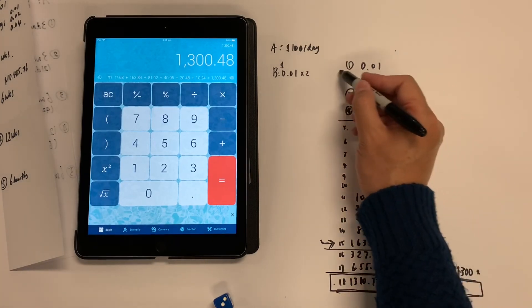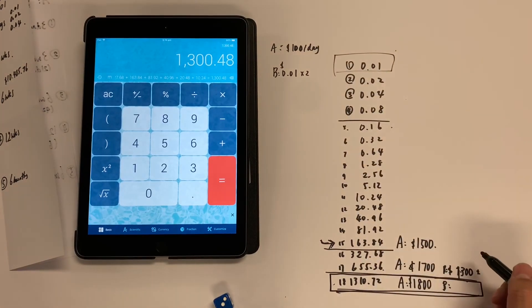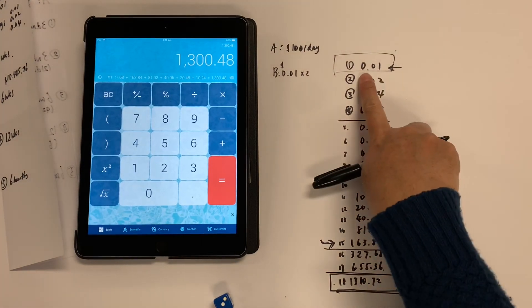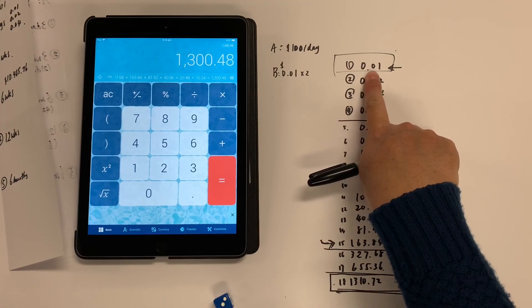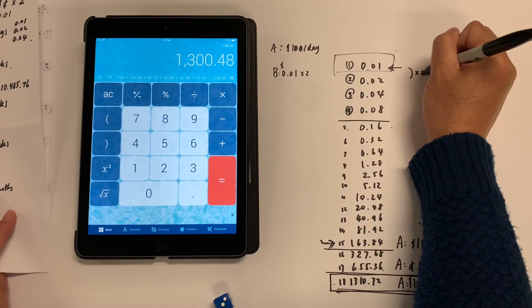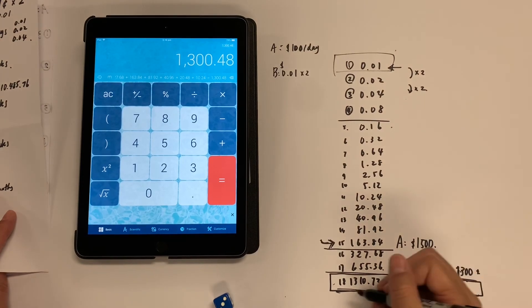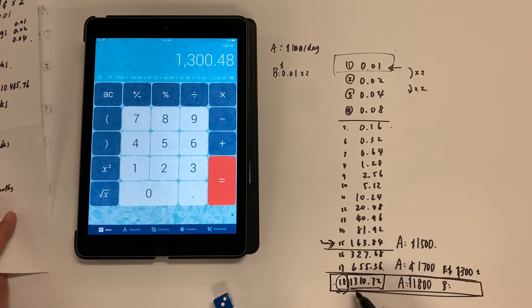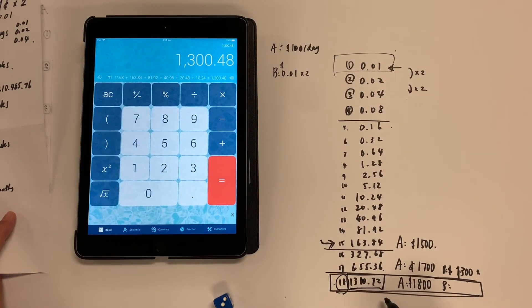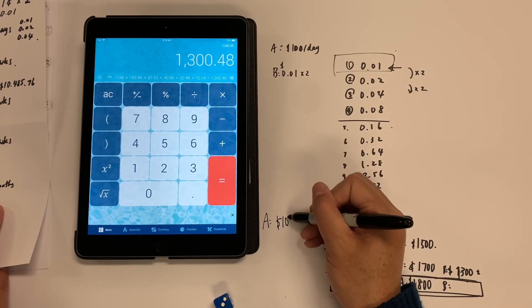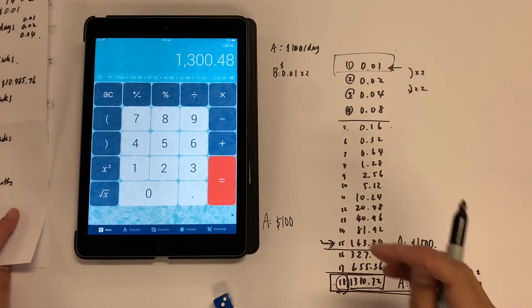Only 18 days. Remember, it started from one cent. Isn't it amazing? So this is the power of double. If you start getting paid one cent per day, every day, and it's doubled every day, within 18 days, your wage is going to become $1,310.72, where the other person is still getting $100 every day. That's the power of double.